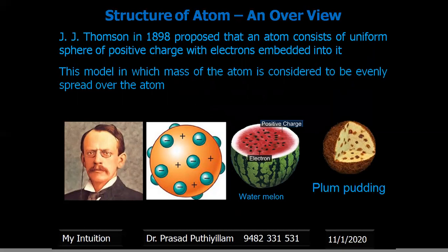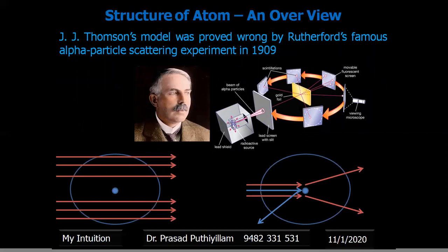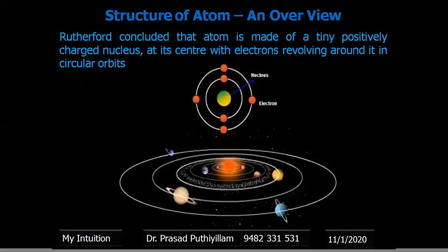J.J. Thomson's model was proved wrong by Rutherford's famous alpha particle scattering experiment conducted in 1909. Rutherford concluded that the atom is made of a tiny positively charged nucleus at its center, with electrons revolving around it in circular orbits.